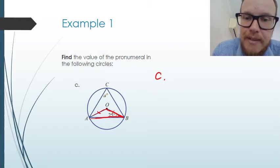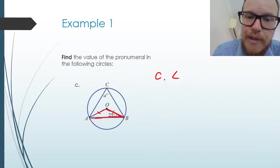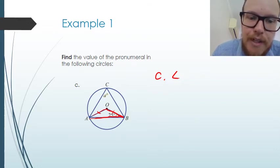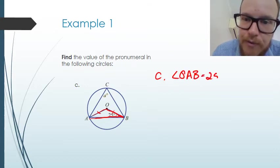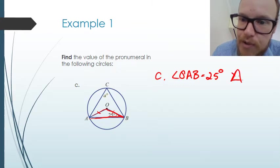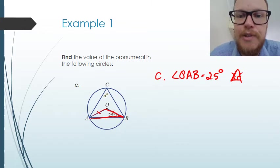So that means angle OAB is going to be equal to 25 degrees, because the base angles of an isosceles triangle are equal.